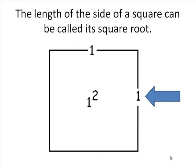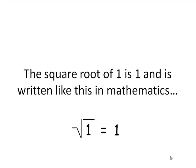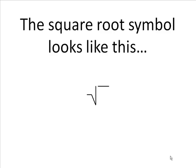The length of the side of a square can be called its square root. The square root of 1 is 1, and it is written like this in mathematics. The square root symbol looks like this.